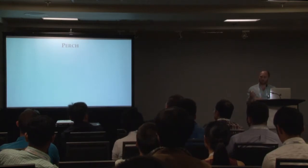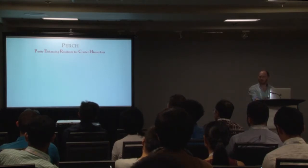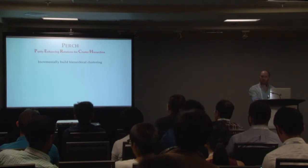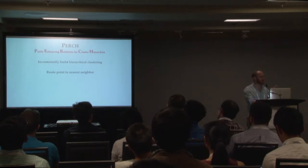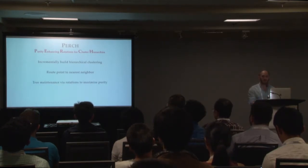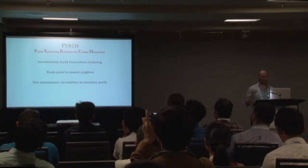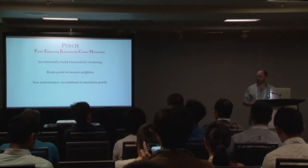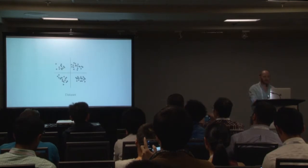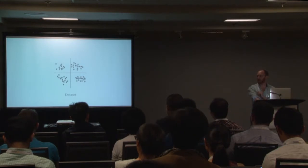PERCH stands for Purity Enhancing Rotations for Cluster Hierarchies. The main algorithmic components are simple: we incrementally build a hierarchical clustering, consuming one data point at a time and routing it to its nearest neighbor. Once routed, we grow the tree. Crucially, we then use an operation called a rotation — borrowed from AVL trees — to maximize the dendrogram purity of the tree. Before going into technical details, let me show a visual representation of what's happening.